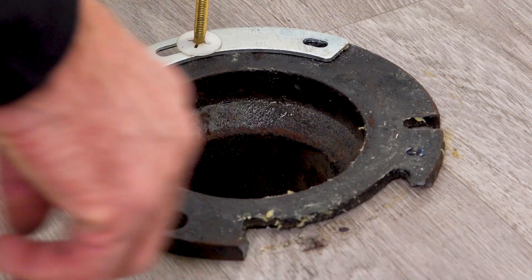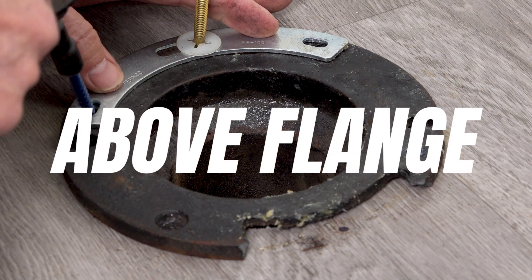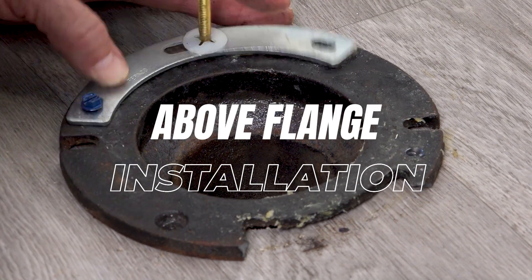The fix-a-flange can be installed either below, which is recommended, or on top of the broken closet flange.